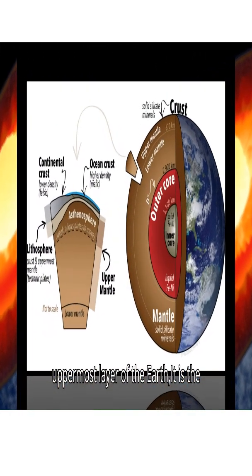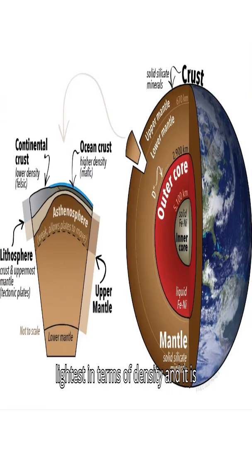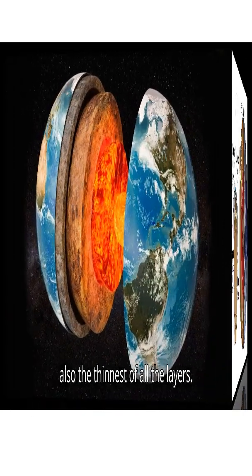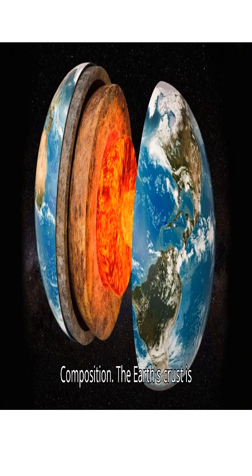The crust is the uppermost layer of the Earth. It is the lightest in terms of density and also the thinnest of all the layers.